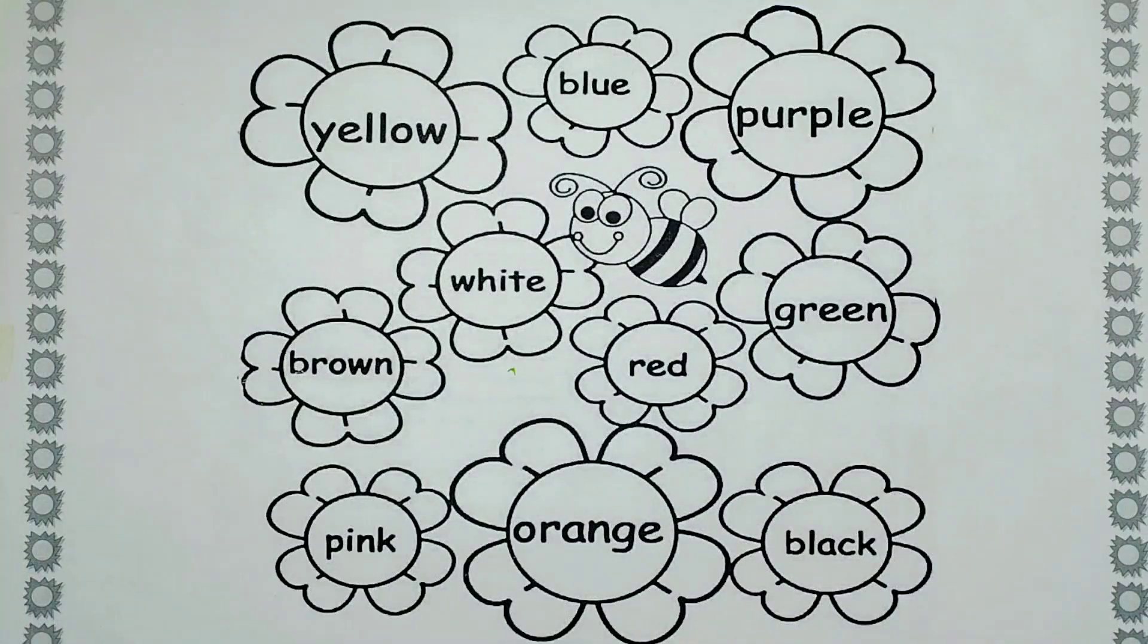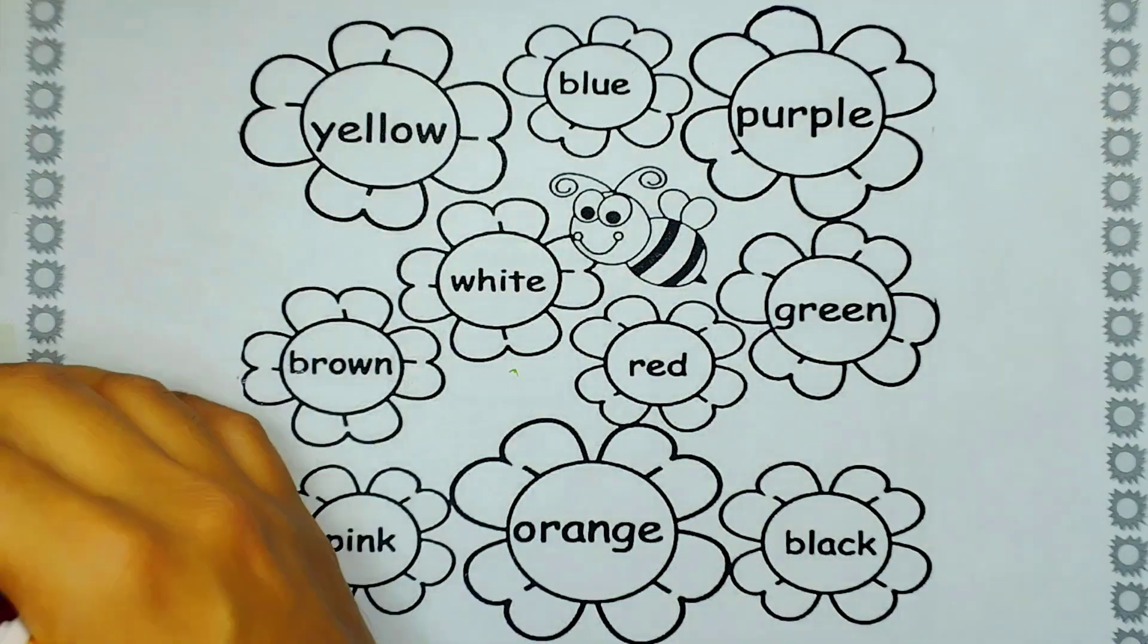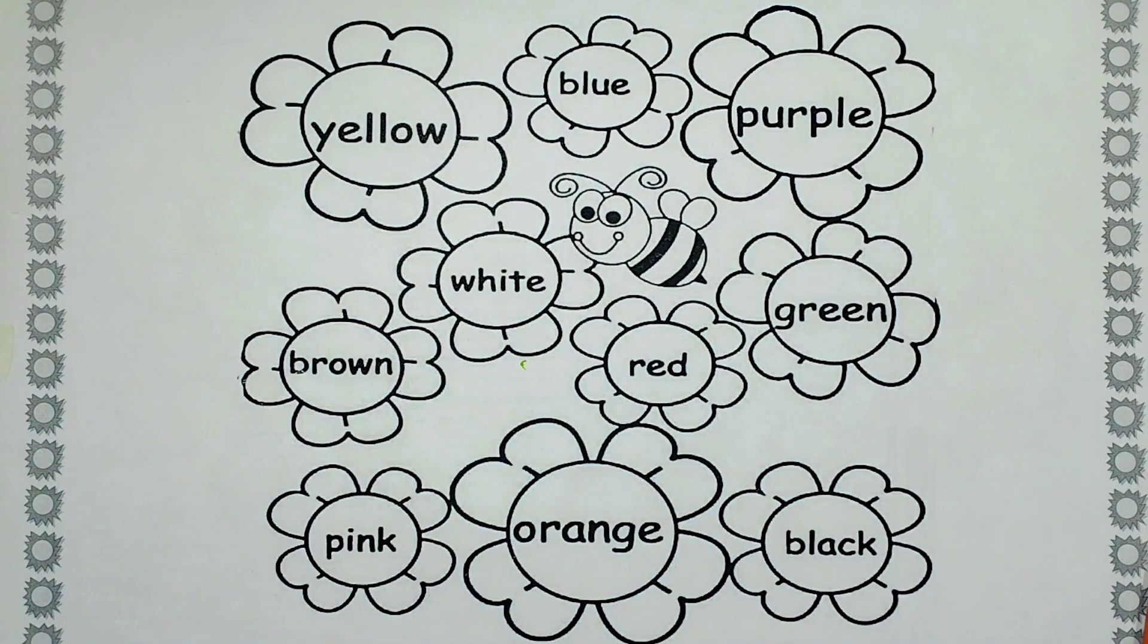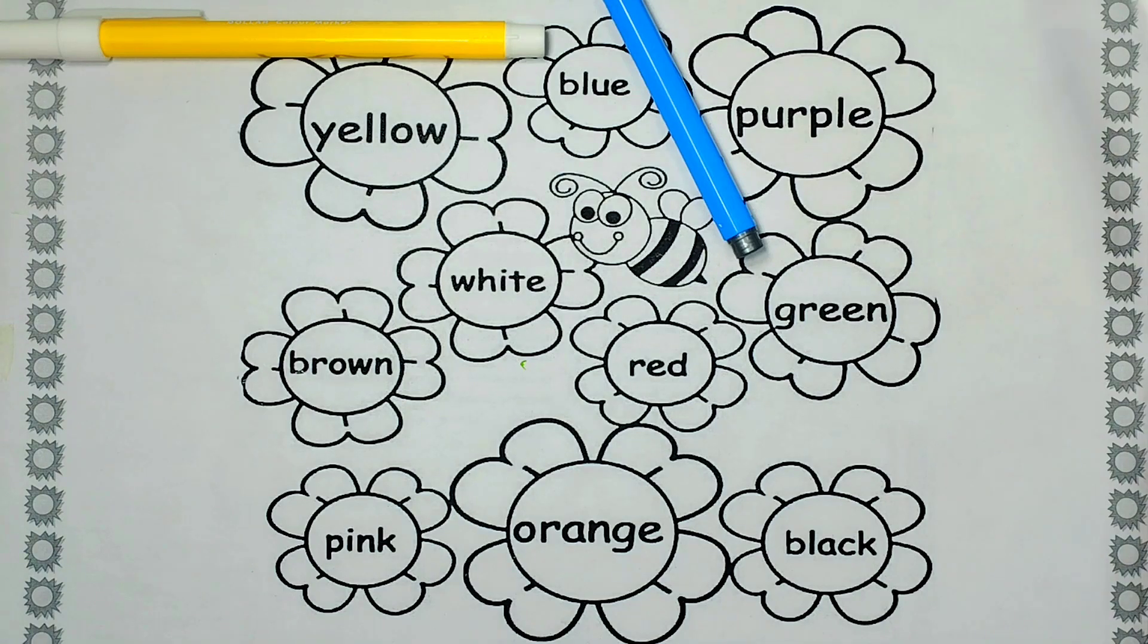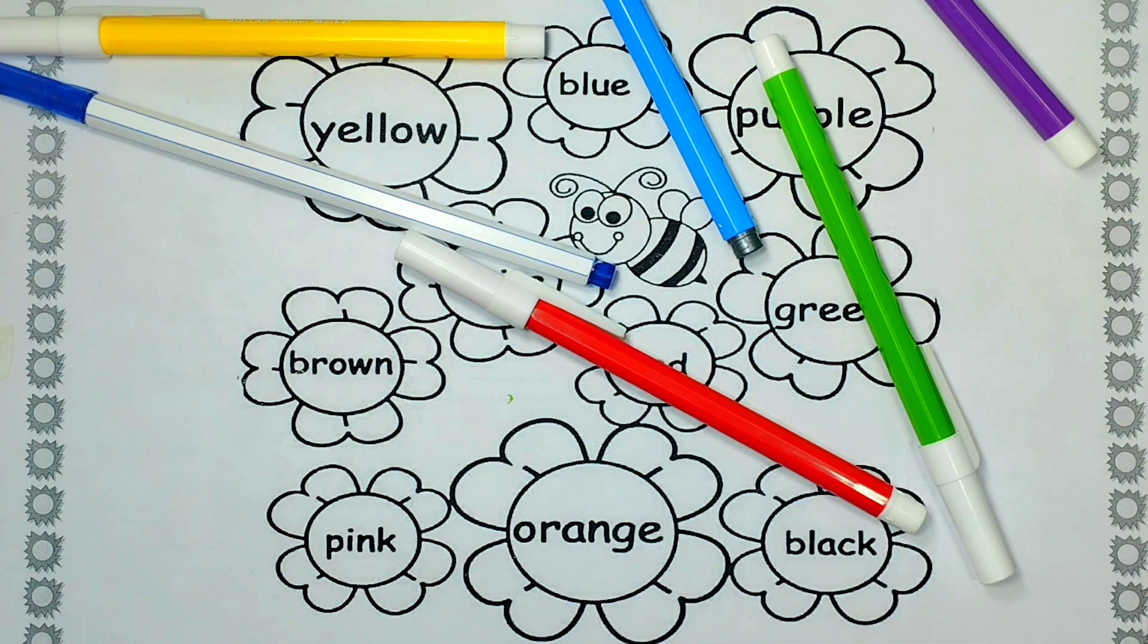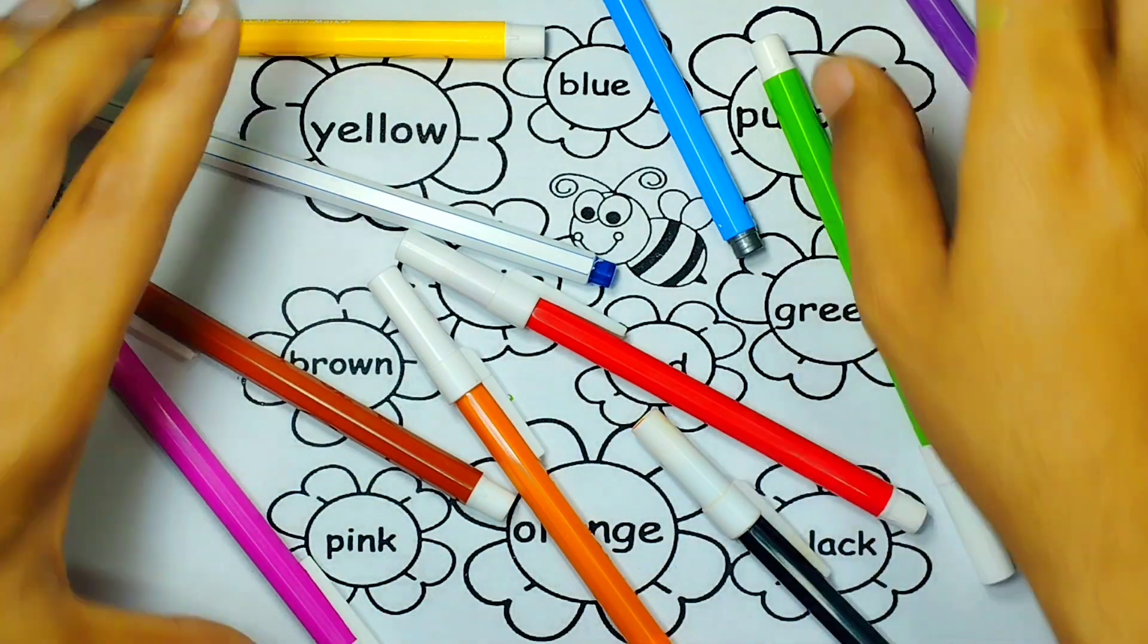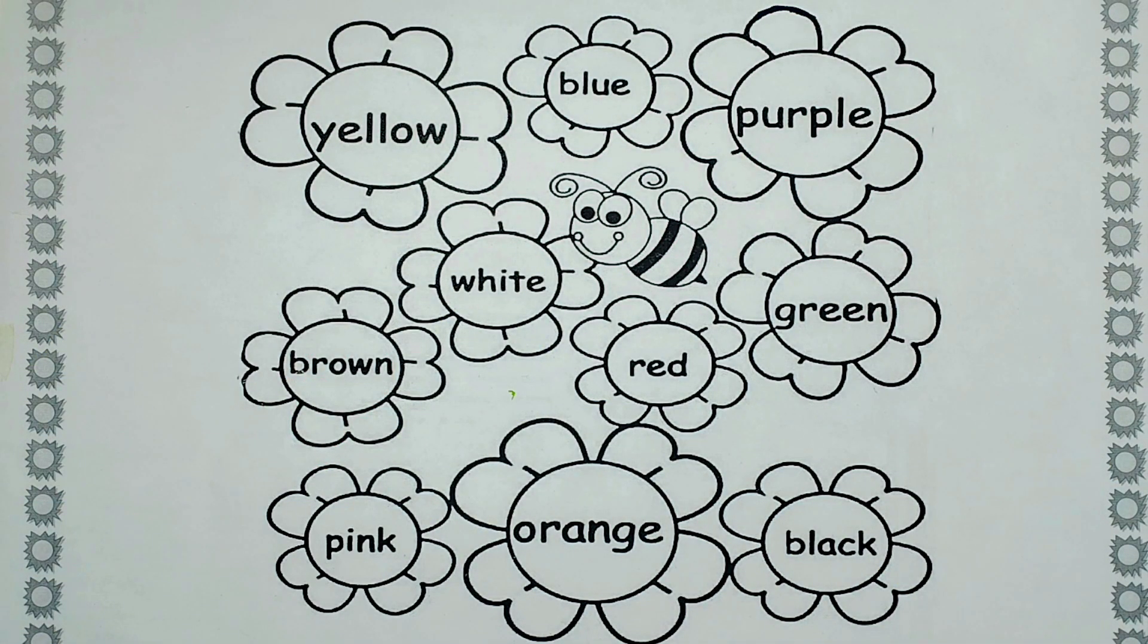Hi kids, I am Bill and today we are going to color these flowers with the name written on them. So let's start. What colors do we require today? Yellow, blue, purple, white, green, red, brown, pink, orange, and black. Let's get started. Don't forget to subscribe, like, and share the video.